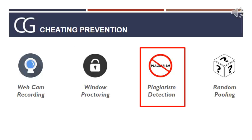We also have plagiarism detection. Suppose 100 candidates submit code — we will check all 100 code submissions for similarity with each other. If the similarity is more than a specific cutoff, say 85%, a red flag is raised stating that possibly these two candidates have copied from each other.